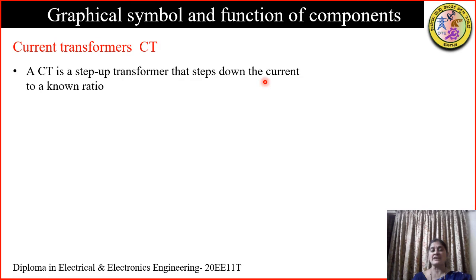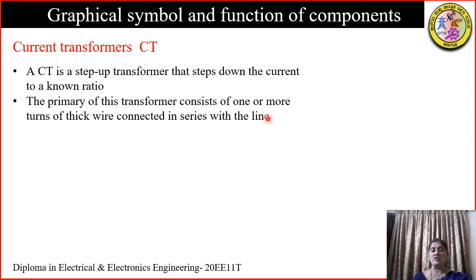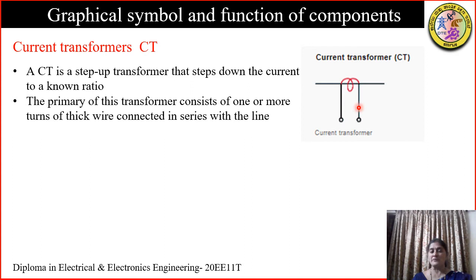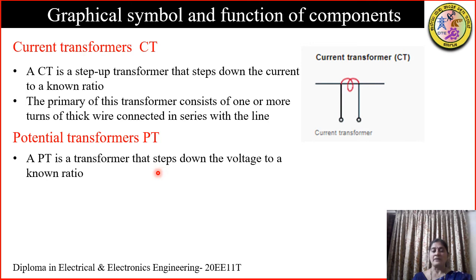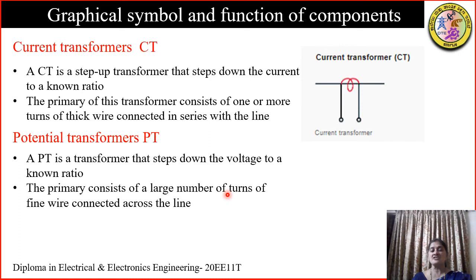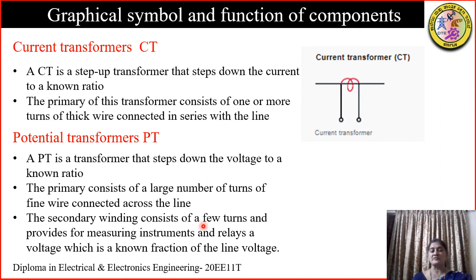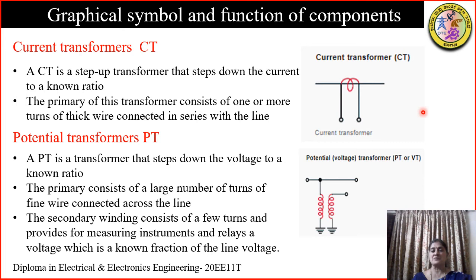A current transformer (CT) is basically a step-up transformer which steps up the voltage but steps down the current to a known ratio. The primary consists of one or more turns of thick wire and is connected in series with the line. The measuring instruments are connected across the secondary terminals. A potential transformer (PT) steps down the voltage. Its primary consists of a large number of turns of fine wire, and the secondary winding has few turns and is used to connect the voltmeter.